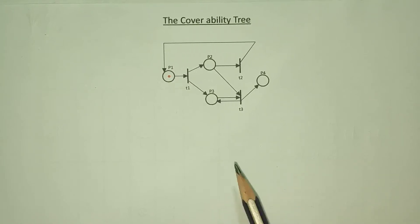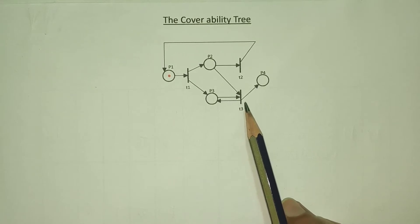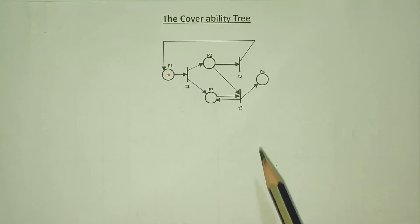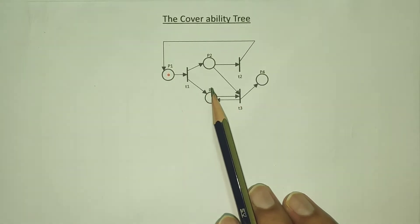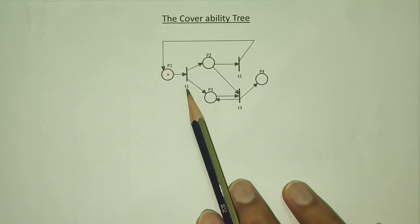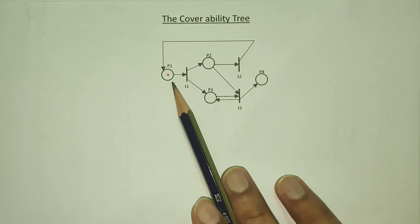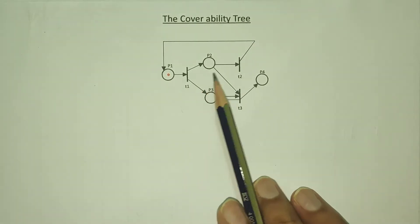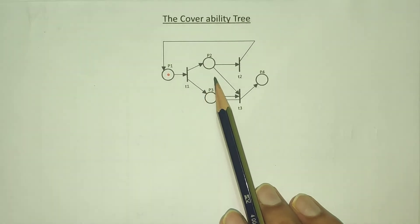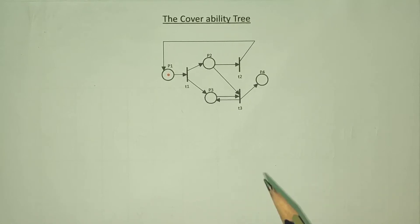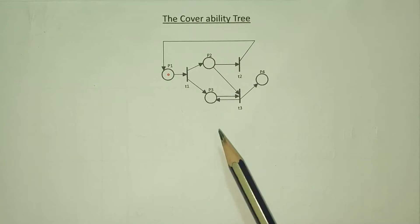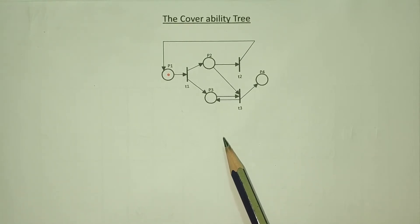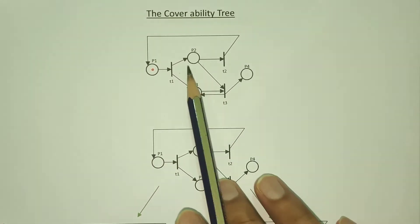So, how do we solve this problem? We will talk about coverability. We will talk about the transition and how the token is possible. We will talk about what three transitions we have, T1 and the T1 place. When we execute this transition, the T1 place will get the token. This is the solution to solve the problem.